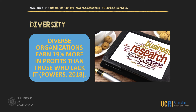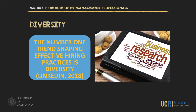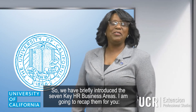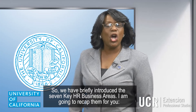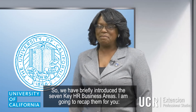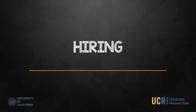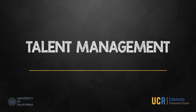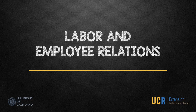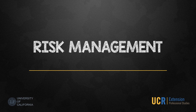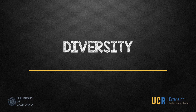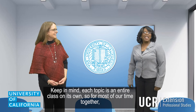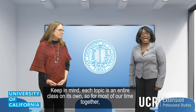According to the Global Recruiting Trends Research Report, the number one trend shaping effective hiring practices is diversity. We have briefly introduced the seven key HR business areas — let's recap them: first, planning; second, hiring; third, total rewards; fourth, talent management; fifth, labor and employee relations; sixth, risk management; and seventh, diversity. Keep in mind, each topic is an entire class on its own.